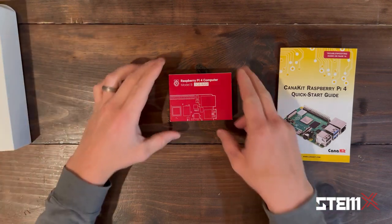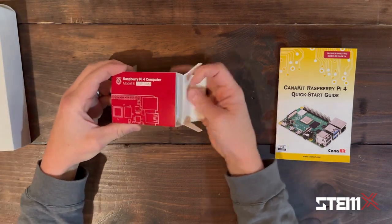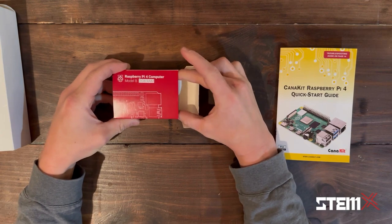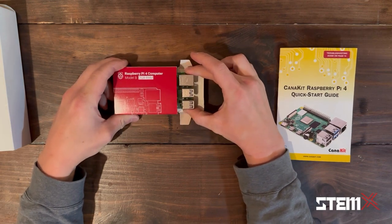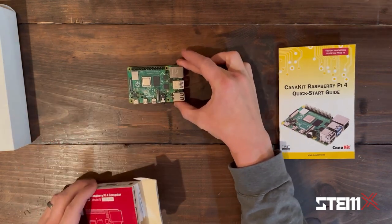So to start, we're going to remove our Raspberry Pi 4 Model B 2 gigabyte RAM computer.